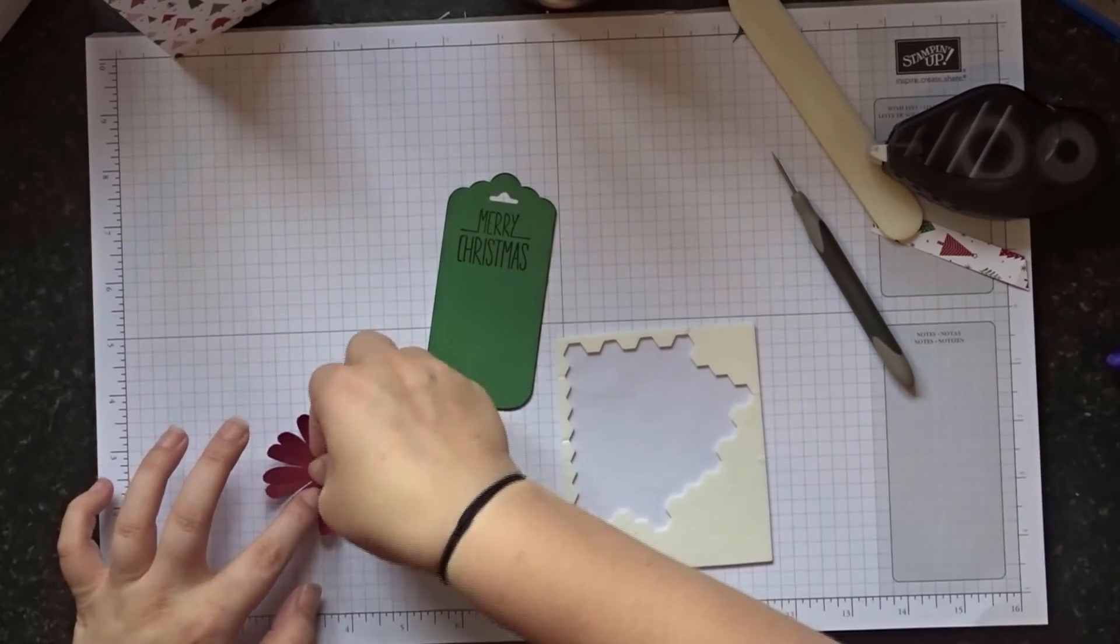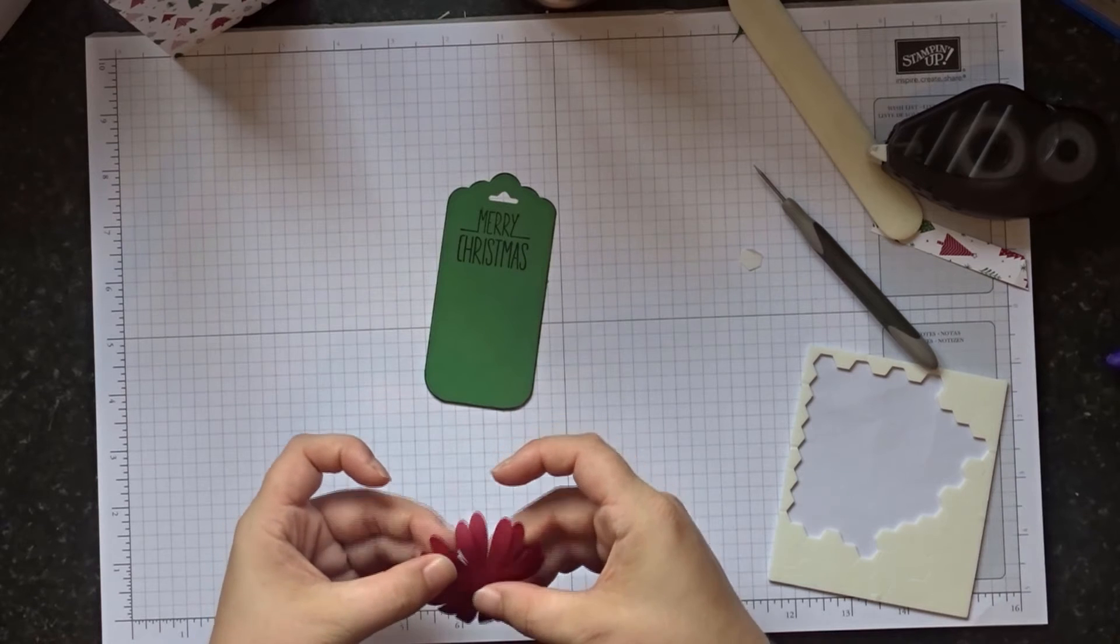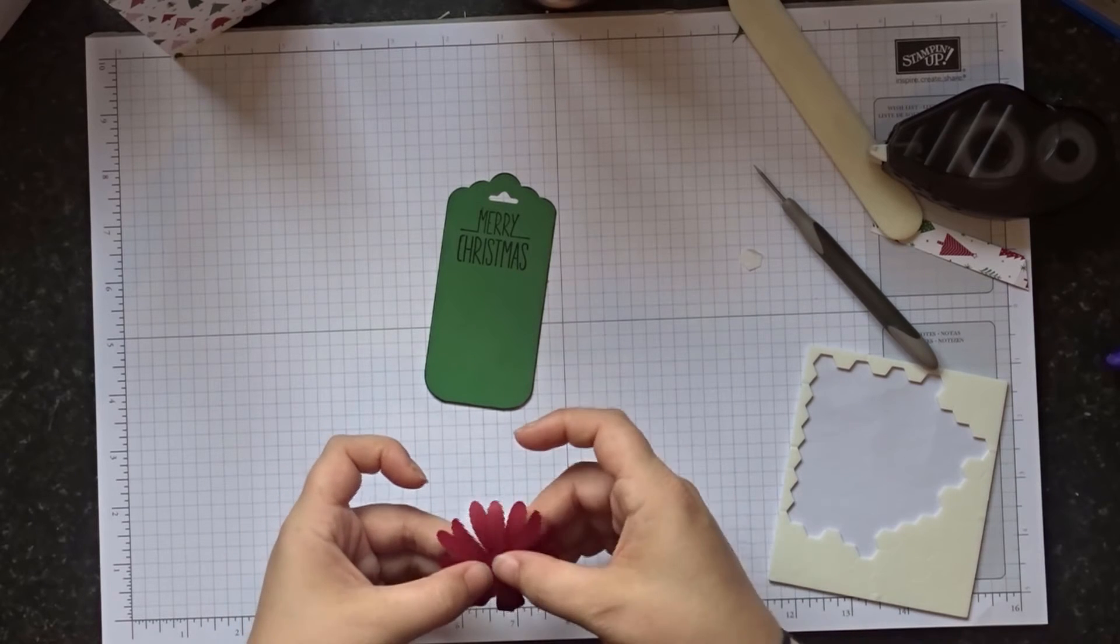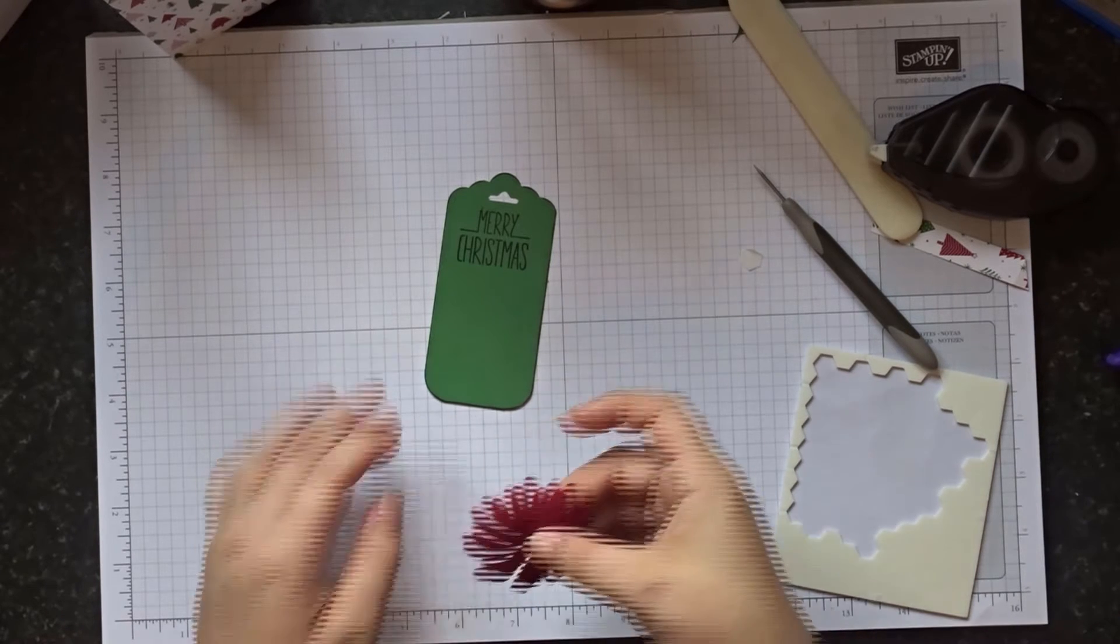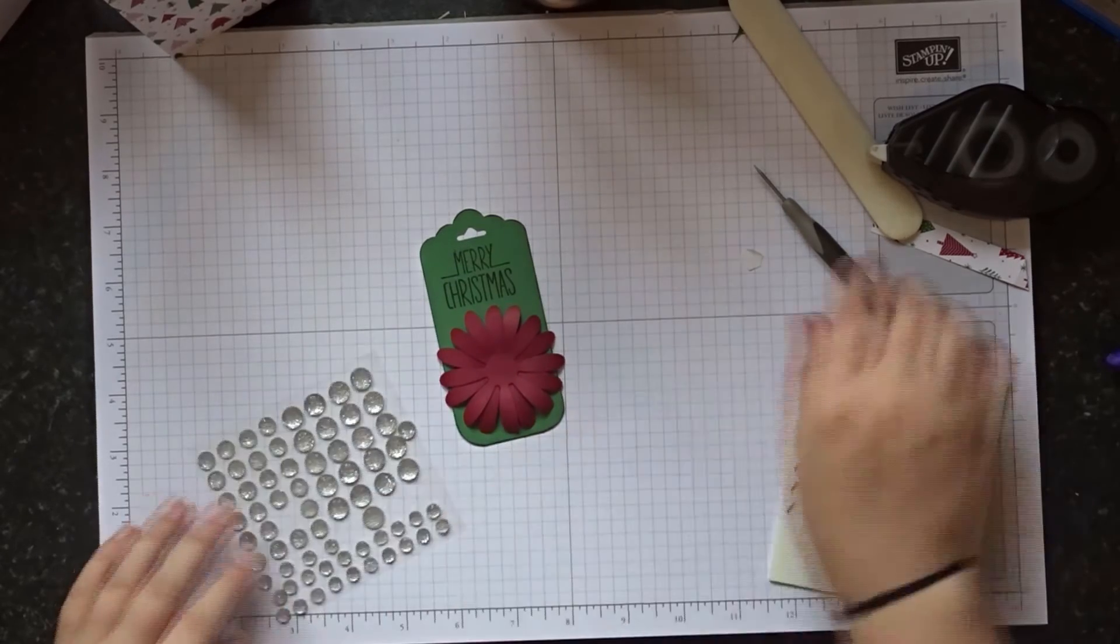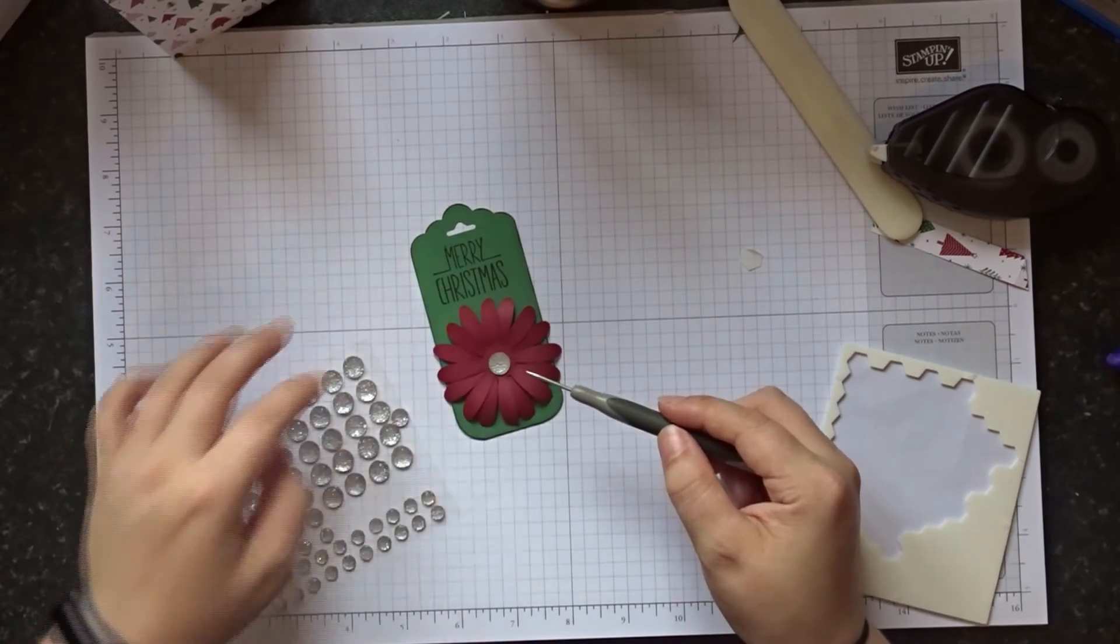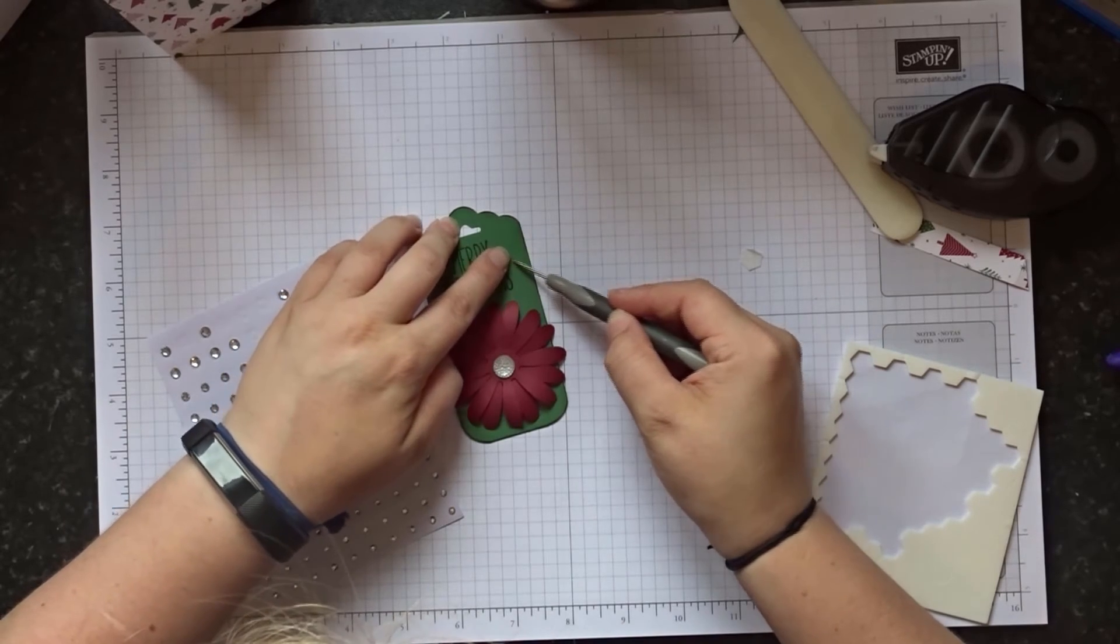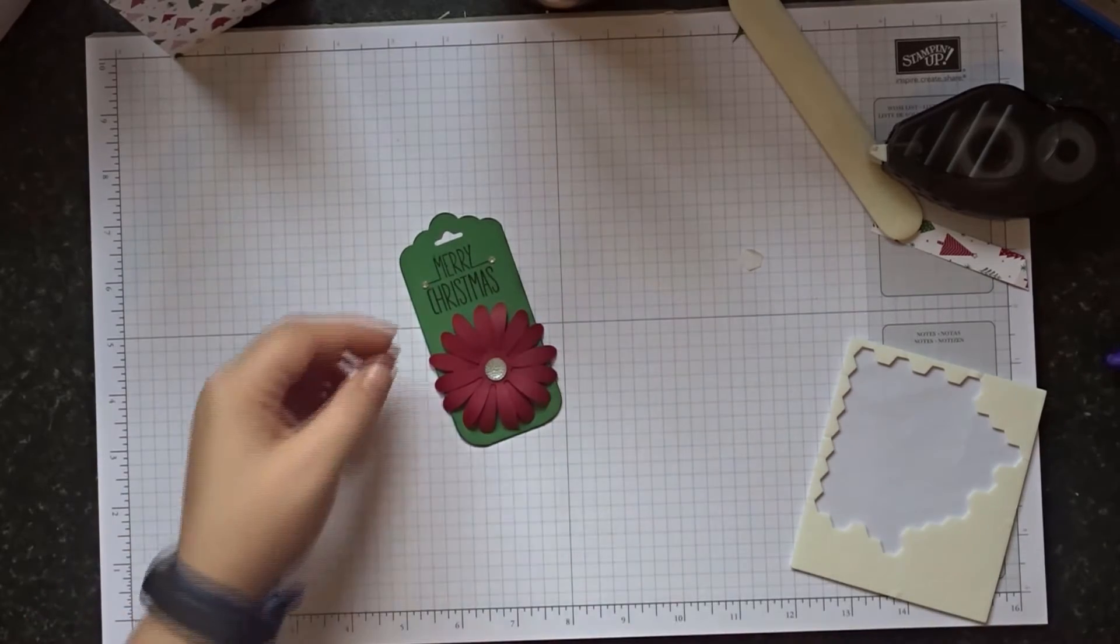So grab your dimensional and your flower. Oh it's moved. And then we're going to stick it onto our tag. And I've got some of the silver faceted gems. We're going to grab the big one and stick that in the middle. I'm also going to grab some of our small ones here. I'm just going to put a couple on here, just on the end of the little lines. So that's our tag made.